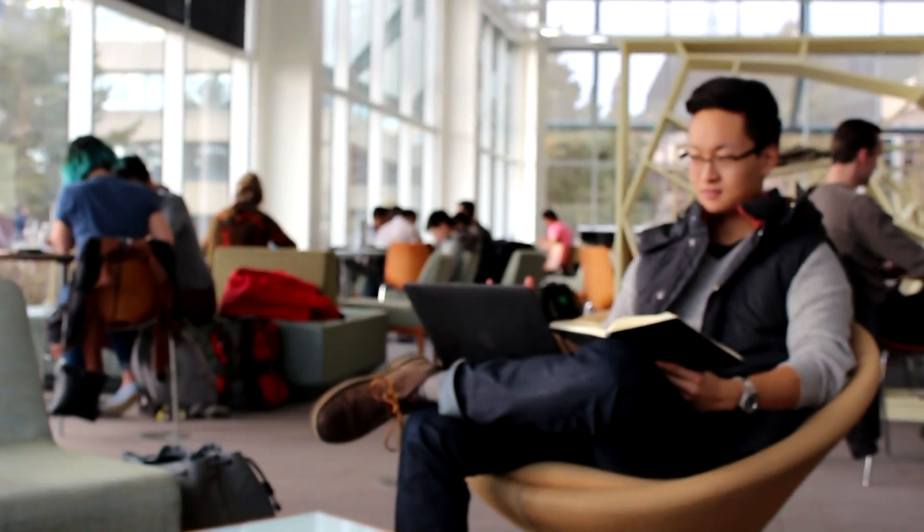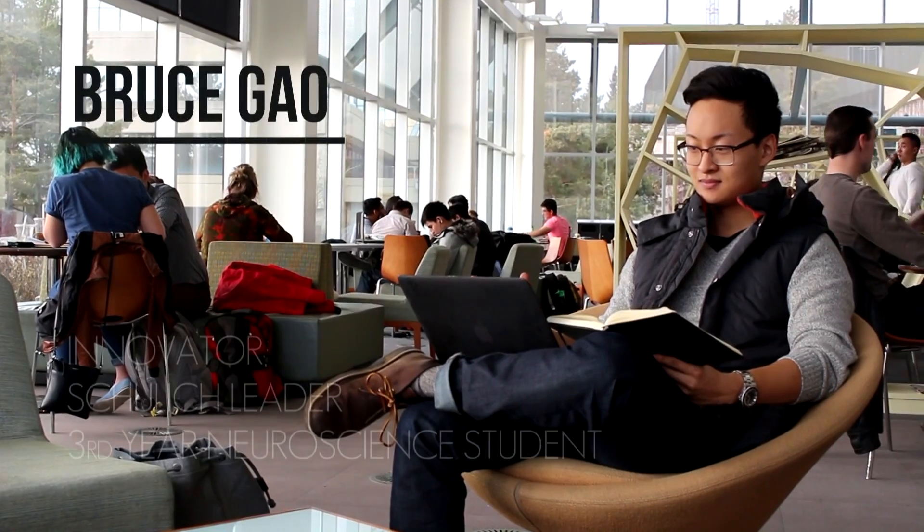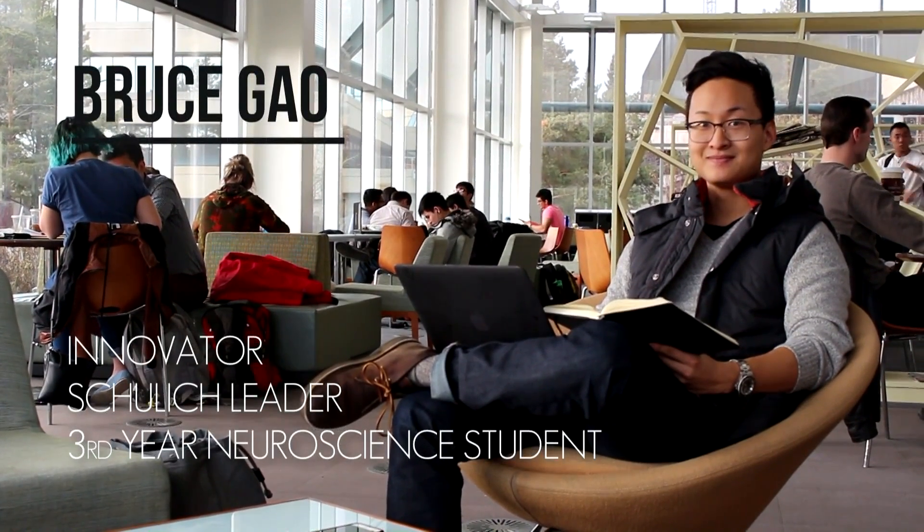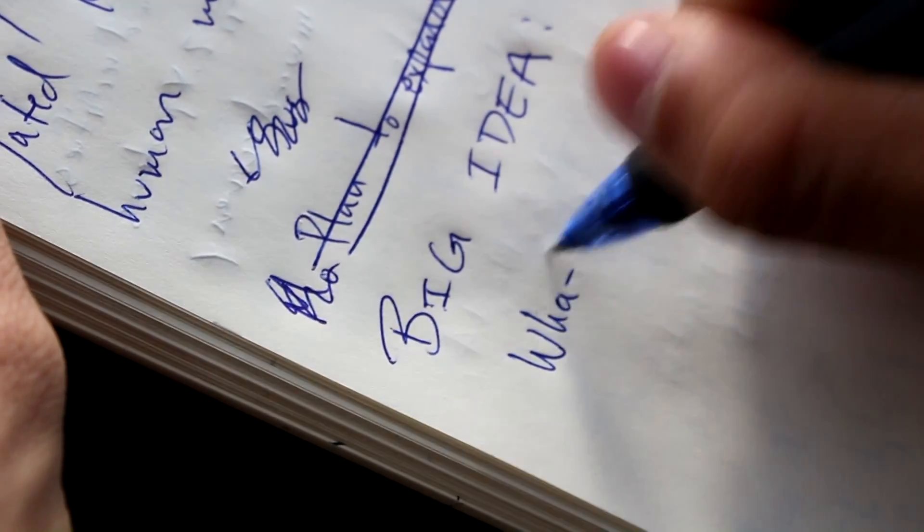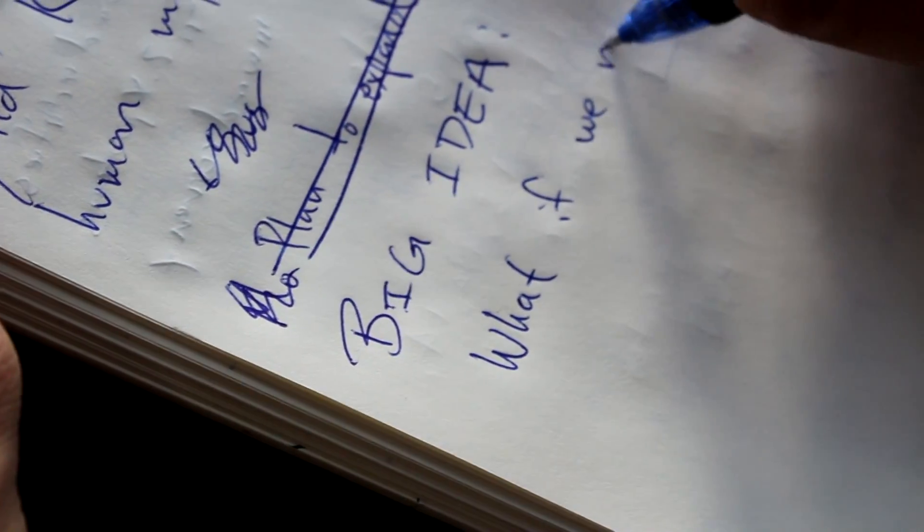My name is Bruce Gow. I'm a third-year undergraduate student at the University of Calgary and I'm an innovator and neuroscientist. I like mountain climbing, origami, technology, and thinking of big ideas that can change the world.